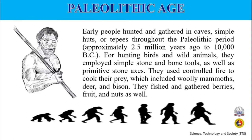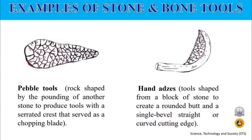They used controlled fire to cook their prey, which included woolly mammoths, deer, and bison. They also fished and gathered berries, fruit, and nuts. Examples of stone and bone tools include pebble tools — a rock shaped by pounding another stone to produce tools with a serrated crest that serves as a chopping blade.